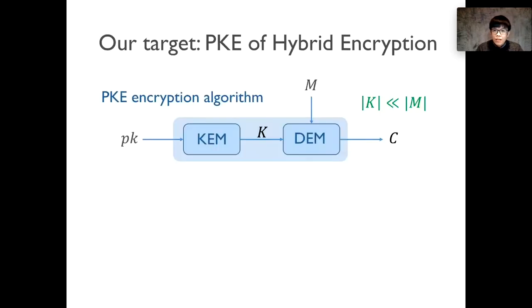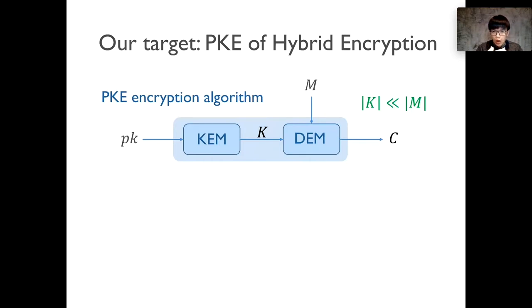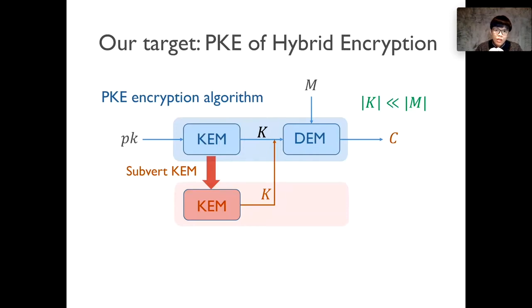Our idea is initially inspired by the observation that almost all practical public key encryption constructions use hybrid encryption: a public key encryption system known as a key encapsulation mechanism (KEM) is used to encapsulate a session key, which is subsequently used to encrypt the plaintext via a symmetric encryption algorithm known as a data encapsulation mechanism (DEM). For such hybrid encryption, the session key is usually much shorter than the plaintext. Therefore, we consider substituting the underlying KEM so that the attacker recovers the session key to break the DEM and thereafter recover the plaintext.